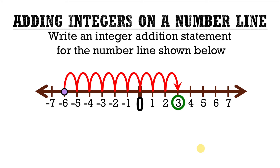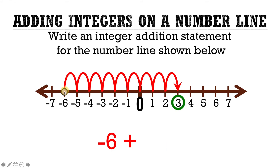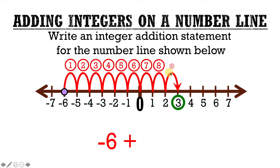Here's our last example — this time we're looking at a number line with the hop method. Our starting point is negative 6, so that's the first number in our number sentence. Are we moving to the right or to the left? We're moving to the right, therefore our second number is going to be positive. Numbering the hops: 1, 2, 3, 4, 5, 6, 7, 8, 9 — we're hopping nine times to the right, so our second number is 9. We land on positive 3, and our final answer is negative 6 plus 9 equals 3.